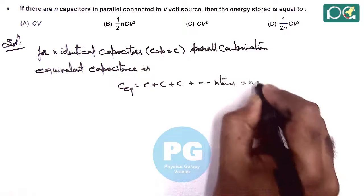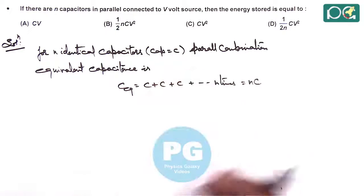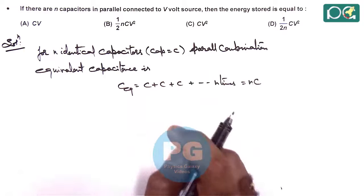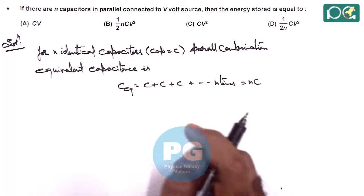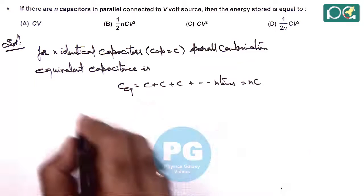So this will be NC because in parallel the capacitances of all capacitors are added up. Now in this situation, if equivalent capacitance is NC then...